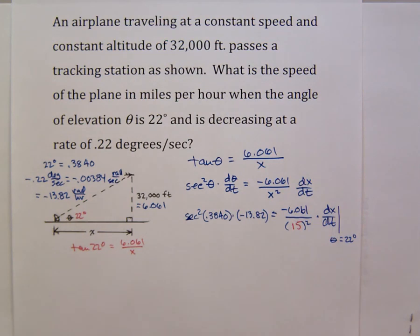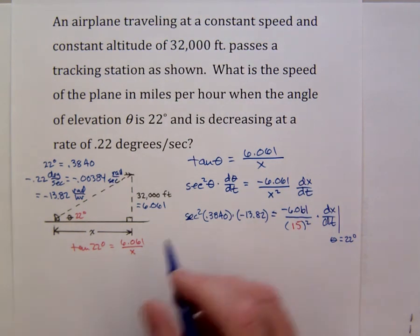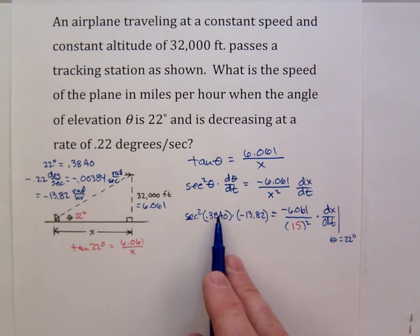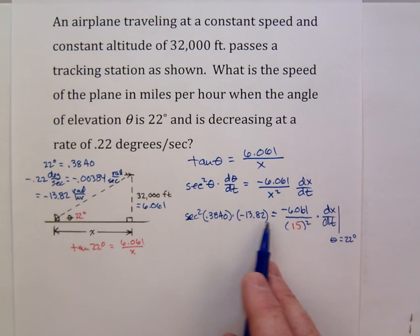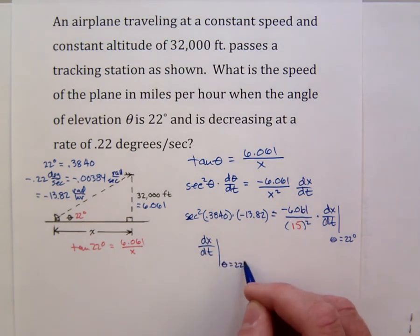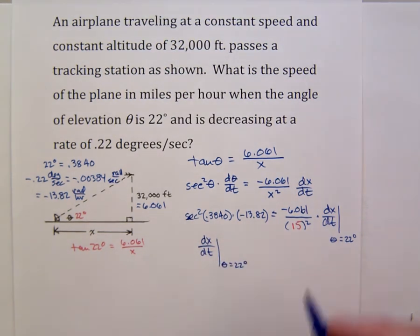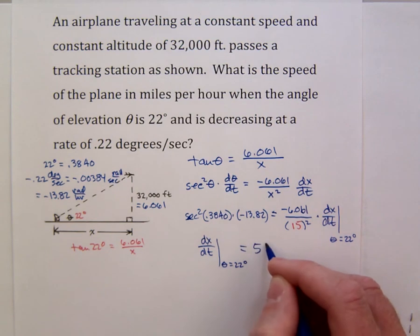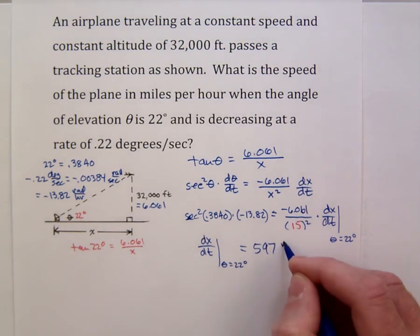Now it's just a matter of algebra. The secant squared is 1 over the cosine squared. So we would perform that calculation times the negative 13.82. If we just multiply both sides by 15 squared and divide by negative 6.061, we get that dx dt when theta is 22 degrees or 0.3840 radians is about 597 miles per hour.